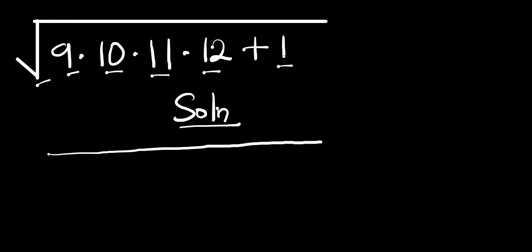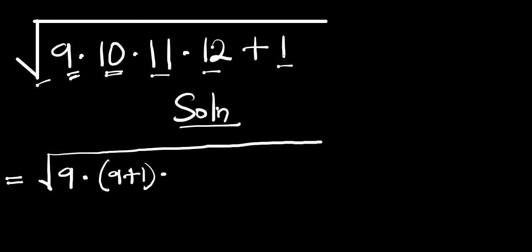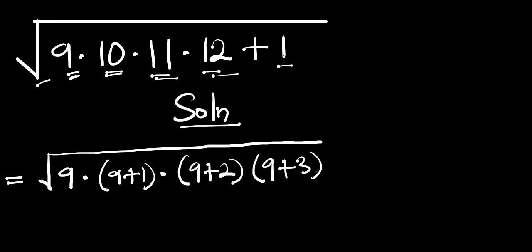So we have our square root. We can write 9 as 9, and instead of 10 we can have 9 plus 1, instead of 11 we can have 9 plus 2, and instead of 12 we can have 9 plus 3, then we have plus 1.